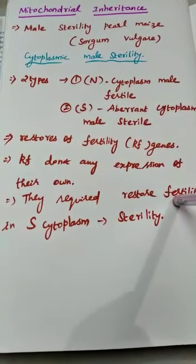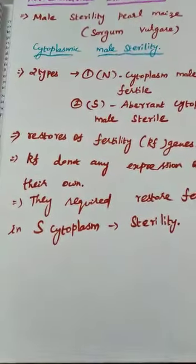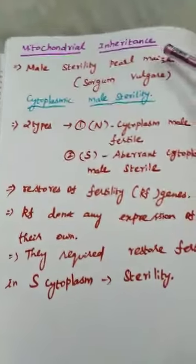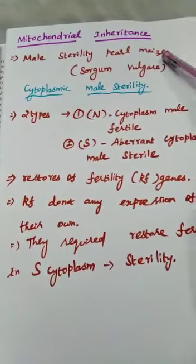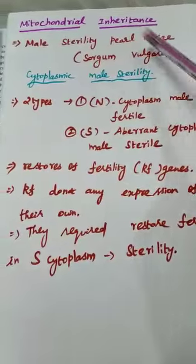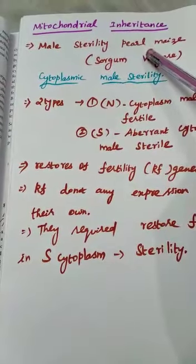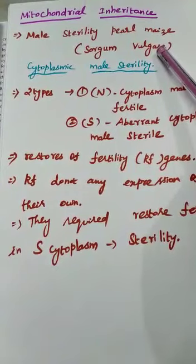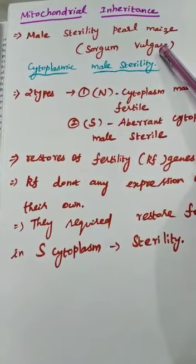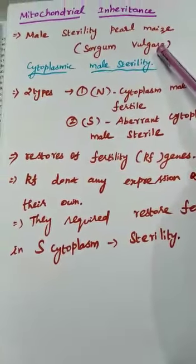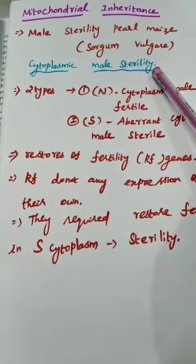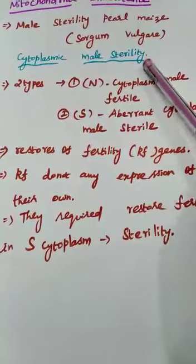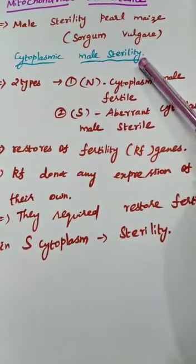Next is mitochondrial inheritance, which is also a non-Mendelian inheritance. In this topic we will discuss male sterility in plants. Sorghum vulgare is the best example of mitochondrial cytoplasmic inheritance, referred to as cytoplasmic male sterility. In this system, male sterility is inherited maternally.